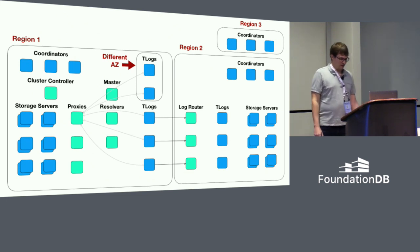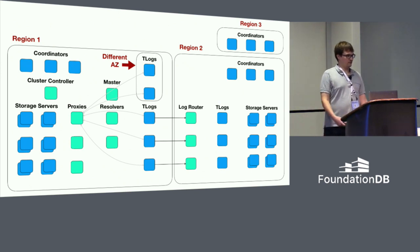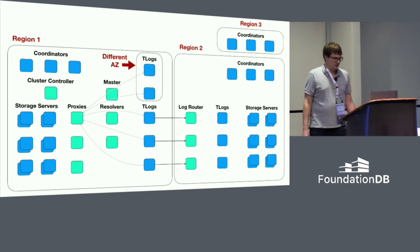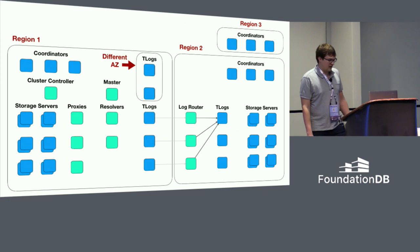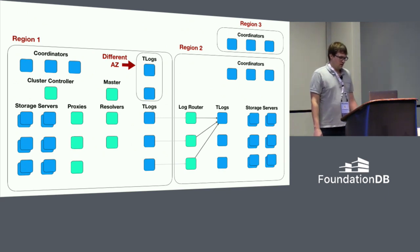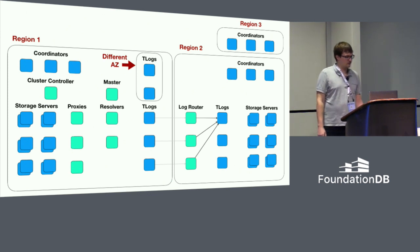After everything has been committed, we have this new role called a log router, which is responsible for pulling the mutations across the network, across the regions, and it pulls every mutation across exactly one time. The way we accomplish this is every mutation, when it's committed, is assigned a random one of these log routers, and that one log router is responsible for pulling it across the network — purely random. The log routers combined in total then have exactly one copy of everything. The transaction logs on the other side re-index the data for the local storage servers by pulling and combining results from all the log routers and redistributing it.